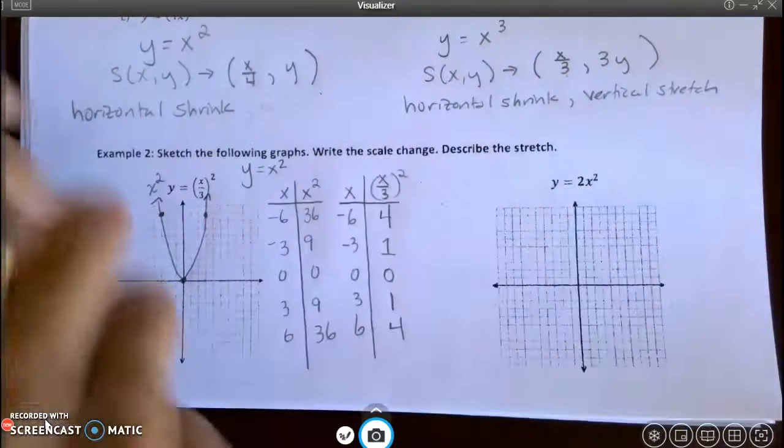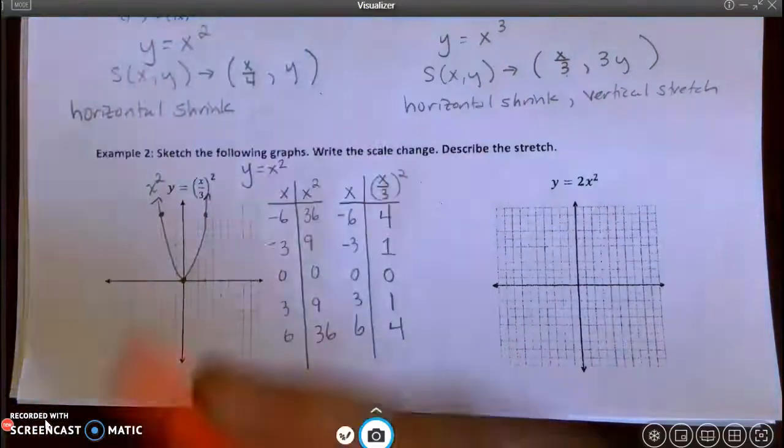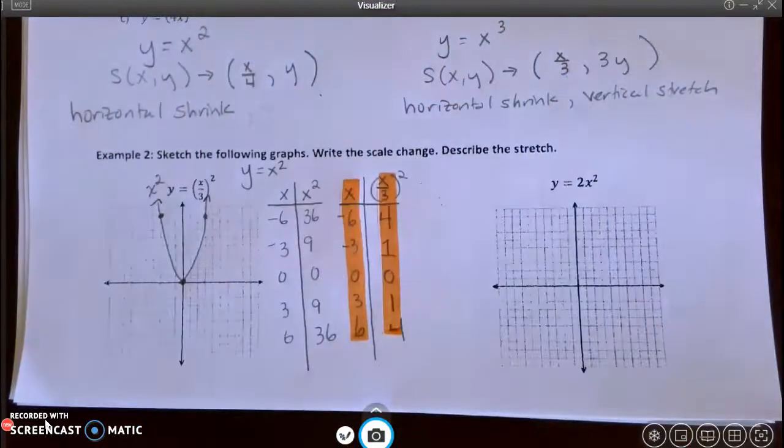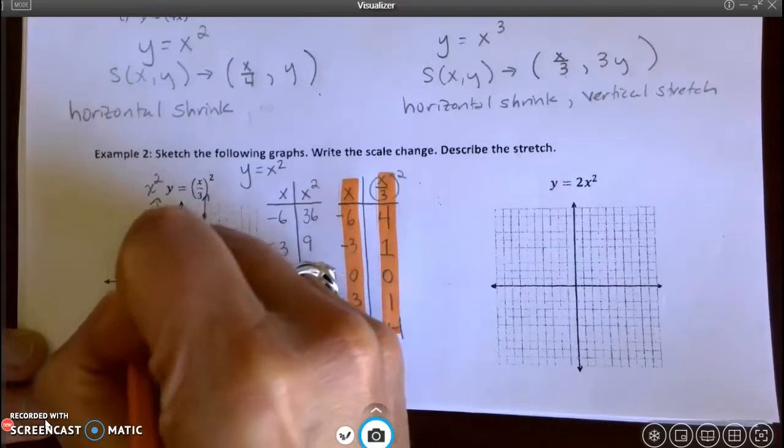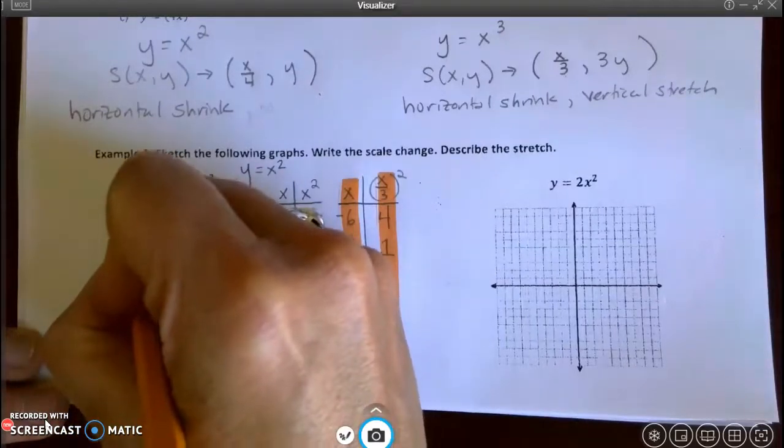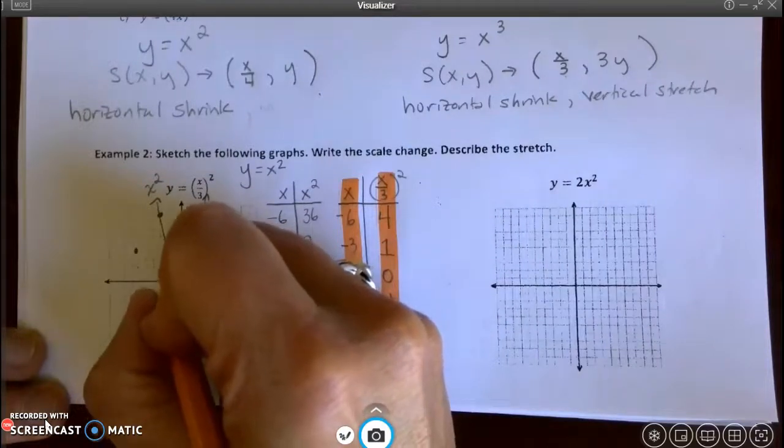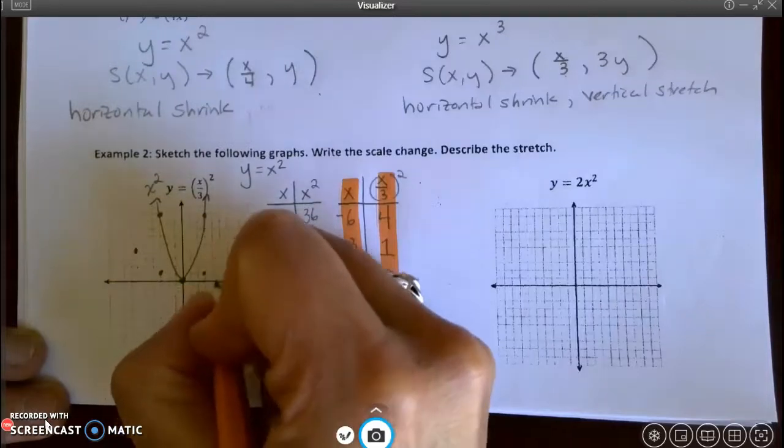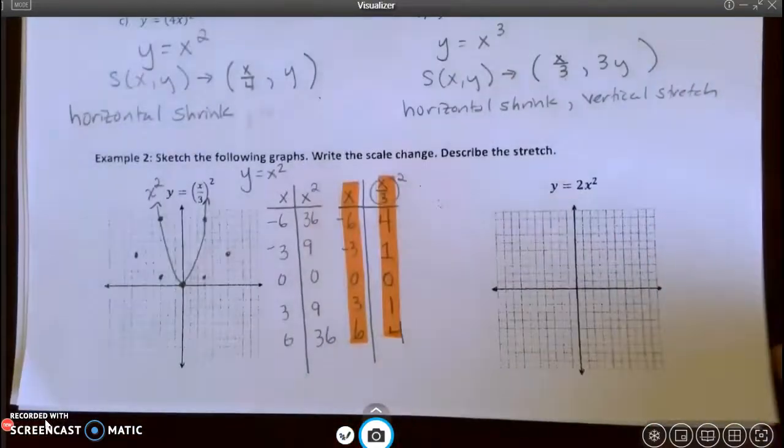So now I'm going to graph these. And I am going to highlight these, just so that I can see the difference. So this is going to be my scale change. I'm going to do an orange. So negative 6, 1, 2, 3, 4, minus 6. And then 1, 2, 3, 4. And then negative 3, 1, 2, 3, 1. 0, 0, 3, 1. 1, 2, 3, 1. 1, 2, 3, 4, 6. And that is.